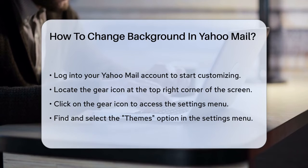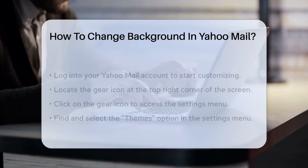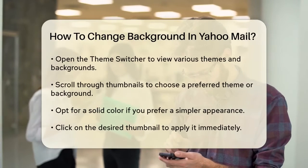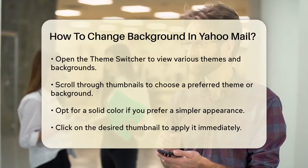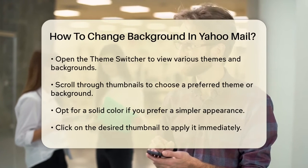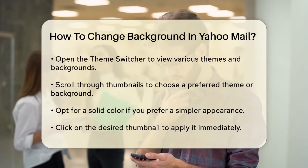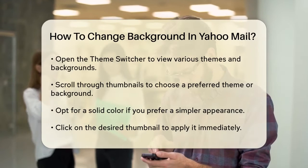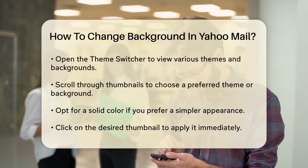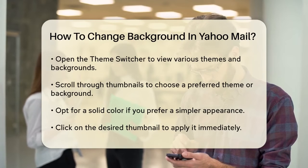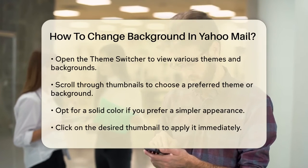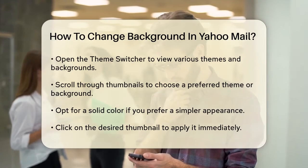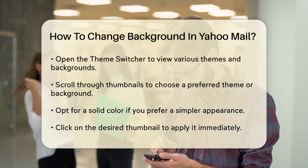Click on Themes to open the theme switcher. Here, you'll find a variety of themes and backgrounds to choose from. You can scroll through these thumbnails to find the one that suits your taste. If you prefer a simpler look, you can select a solid color instead of a photo. Just click on the thumbnail of the theme or color you like, and it will be applied immediately to your Yahoo Mail interface.